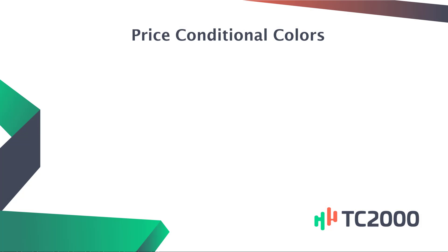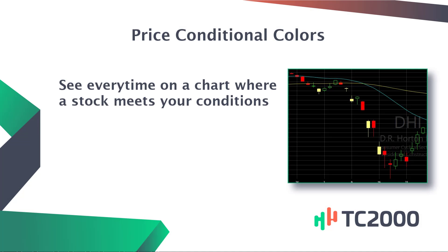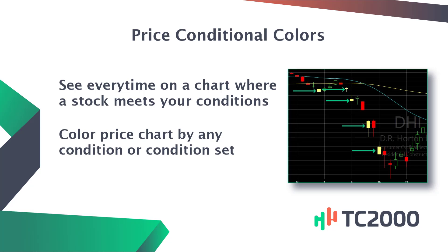Coloring price bars by conditions allows you to see every time on a chart where a stock has met your condition or conditions historically. You can color your price chart by any condition or condition set you want to use. Let's walk through how it's done with an existing condition set.